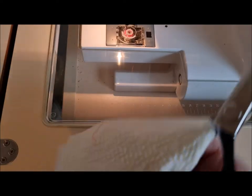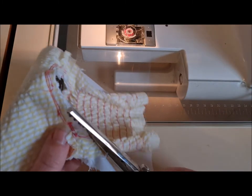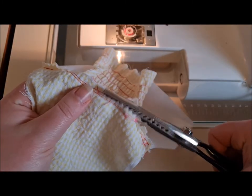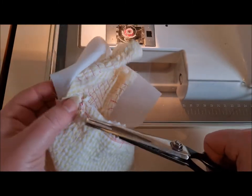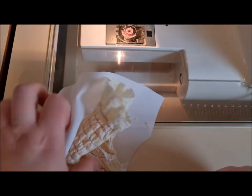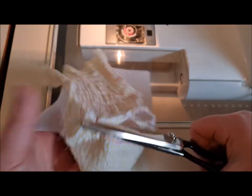Then what we're going to do is trim the seam allowance away with our pinking shears to make it more manageable and sit better. Take out some of that bulk, and it will get a bit fiddly around the shirring, so just be careful what you're cutting.